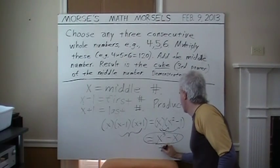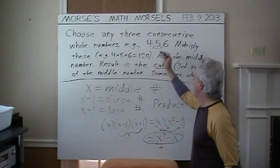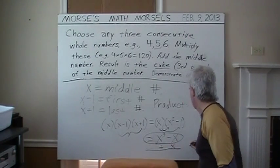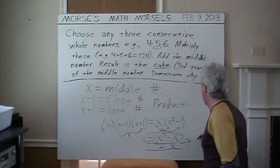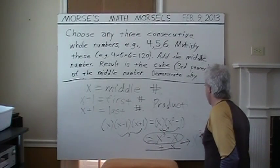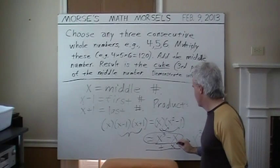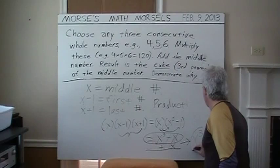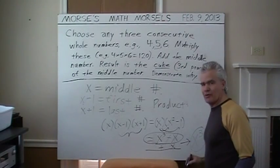X cubed minus X. Then add the middle number. Which is our original X. In that case 5. We're adding a negative X to a plus X. And voila. We're just left with X cubed. The negative X add to the positive X. They tend to cancel.